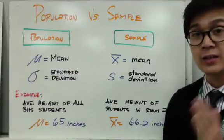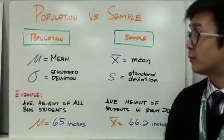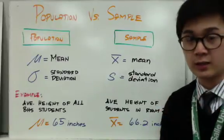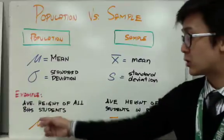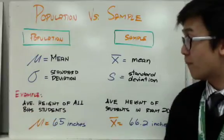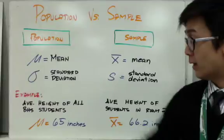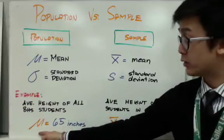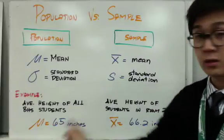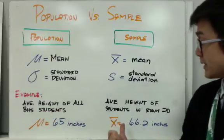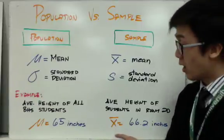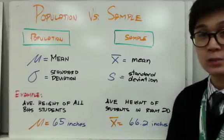It's important that you know your notation in statistics so you'll be able to understand statistical problems. For example, if I took the average height of all BHS students, since I took all the heights in Barstow High School, my notation would be mu. The average height of all students in Barstow High School is stated at 65 inches, so I use mu because I'm using the population. And for the second example, I'm using the average height of students in room 20, which is just a sample, so I use X-bar — X-bar equals 66.2 inches.